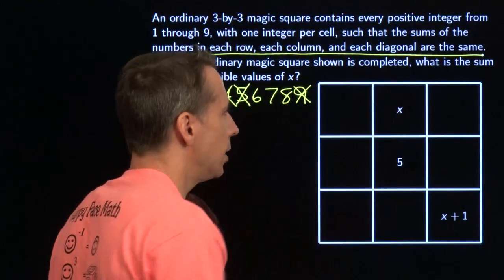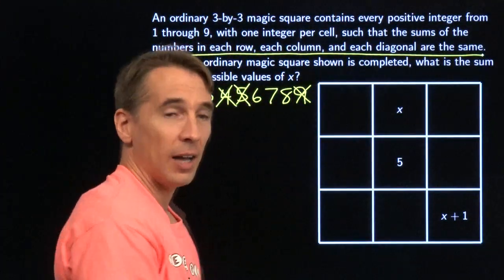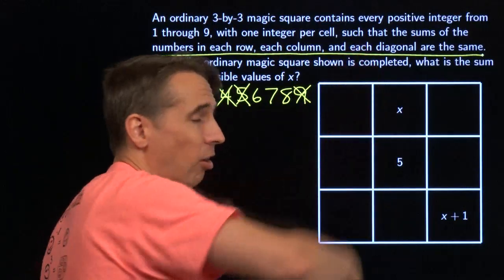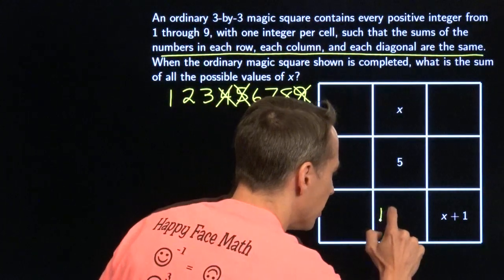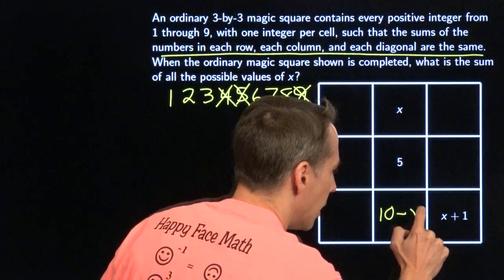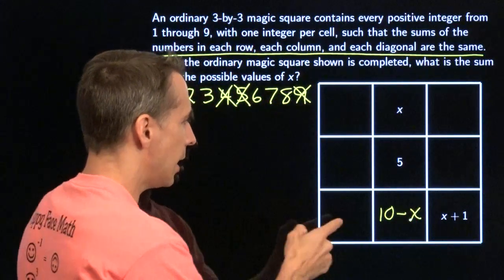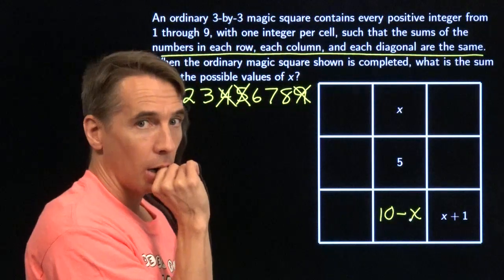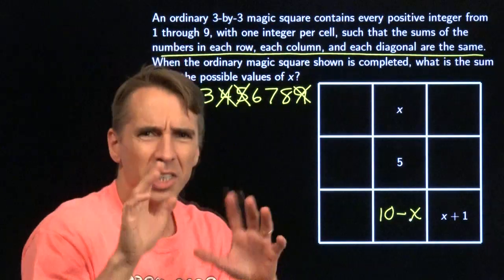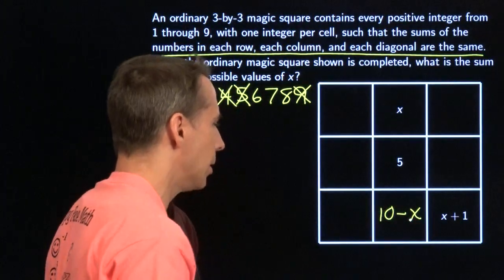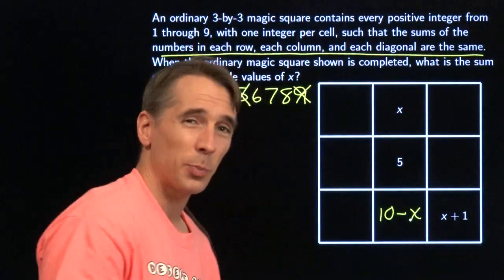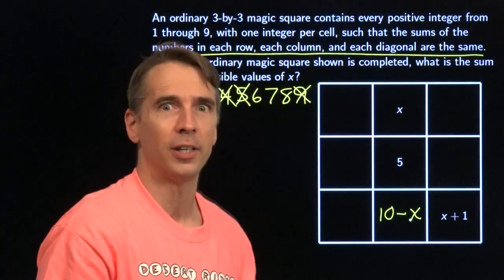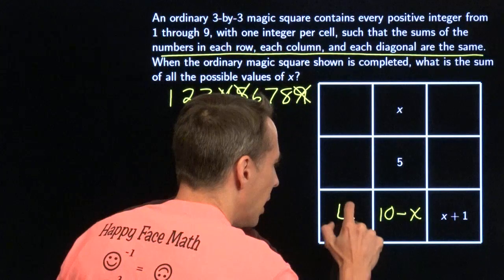Look at this column right here. I've got an x there. I've got a 5 there. I have to put something in here to make all of this add up to 15. That means this number down here is 10 minus x. Whatever x is, and that tells us... I don't know what that tells us. Let's keep going. Let's go along this row down here. I have a 10 minus x there and x plus 1 there. I add those up, I get 11. That tells me this last number has to be 4, because these all have to add up to 15.